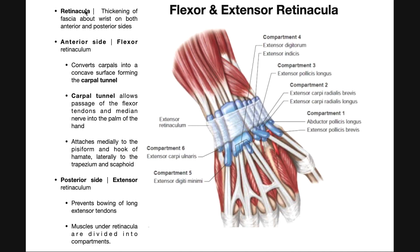First of all, what are retinacula? These are thickenings of the fascia around the wrist, and they exist both on the anterior and posterior sides of the wrist. This picture displays the retinacula. We're looking at a posterior side of the distal forearm, wrist, and hand, and so these are the extensor muscles of the forearm that will extend either the wrist and/or the digits.